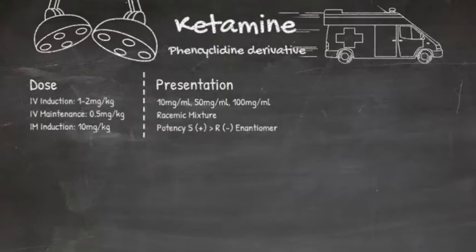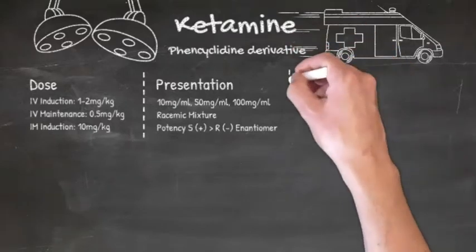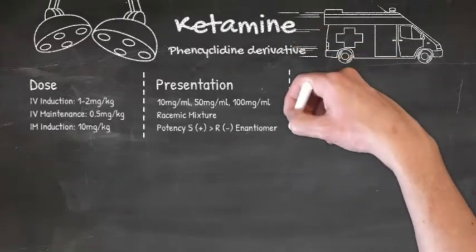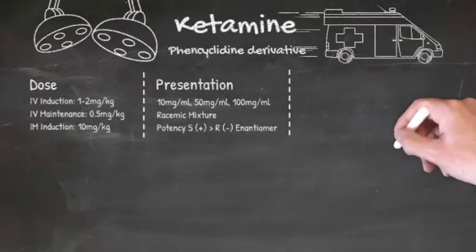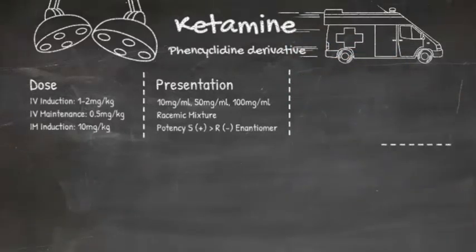There are two isomers of ketamine, or more specifically enantiomers. The S-enantiomer is 2-4 times more potent than the R-enantiomer, and the S-enantiomer is also less psychotomimetic.